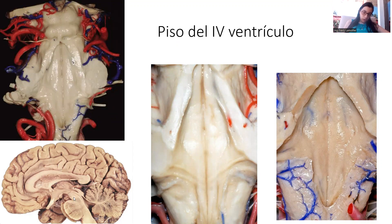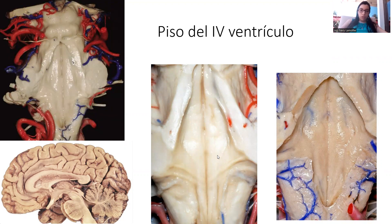This is the midbrain, the brainstem, midbrain, pons, and medulla. This is the fourth ventricle. It is limited above by the aqueductus cerebri and below by the obex. The lateral part is the recess of the fourth ventricle that opens to the foramina of Luschka and to the cerebellopontine angles.